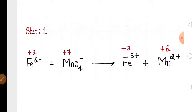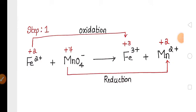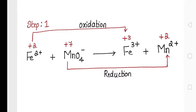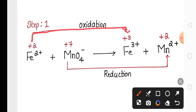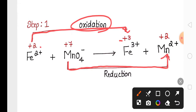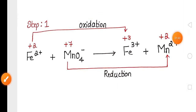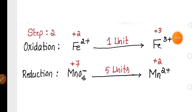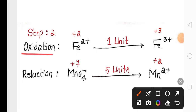We now divide this redox reaction into oxidation and reduction halves according to oxidation number. Iron's oxidation number is increasing from +2 to +3, so this is the oxidation reaction. Manganese's oxidation number is decreasing from +7 to +2, so it is considered reduction. We have divided the redox reaction into oxidation half and reduction half.